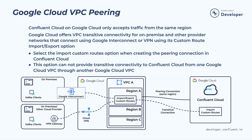Unlike AWS VPCs and Azure VNets, which are regional, Google VPCs are global and can span multiple regions. Despite this, even if a GCP Confluent Cloud network is peered to a global GCP VPC, only services in the same region as the cluster can access the Confluent Cloud cluster. An exception to the no transitive connections rule is Google's custom route import and export features. Google Cloud peering offers transitive connectivity for VPN or Google Interconnect to on-premises or other cloud provider networks to reach Confluent Cloud using this feature.